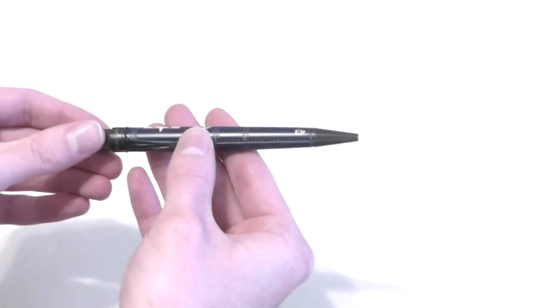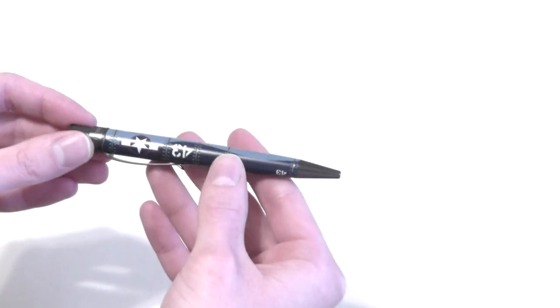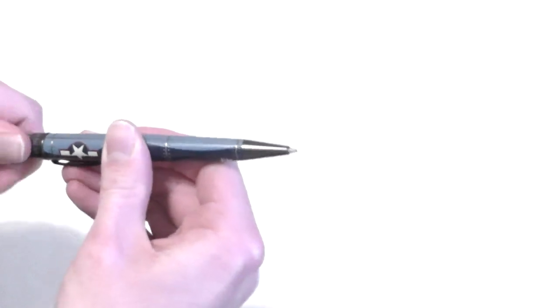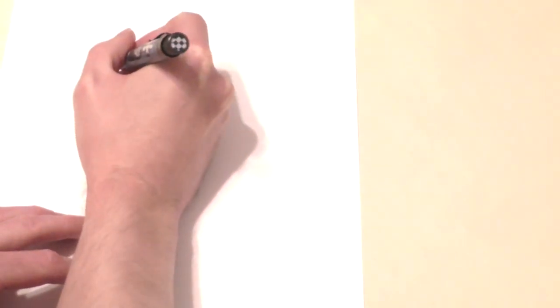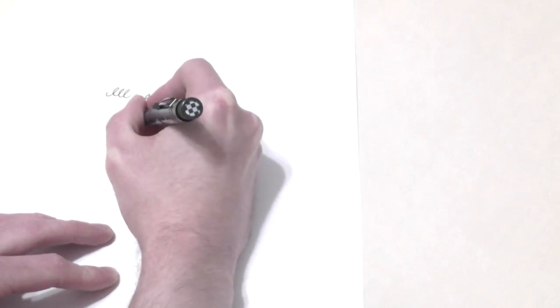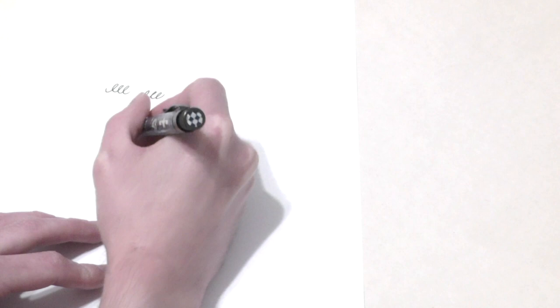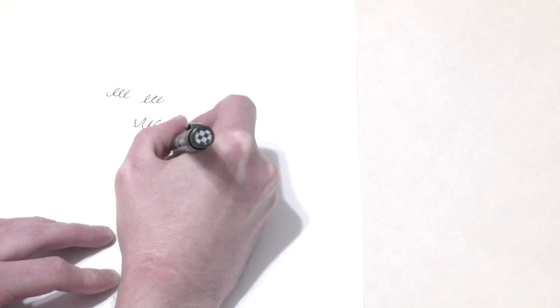There we go. Look at that. So this is a rollerball pen. There's a twist mechanism. Okay, I'm back. I just wanted to get some paper because I have never tried a rollerball pen before. That's nice. It's really nice.